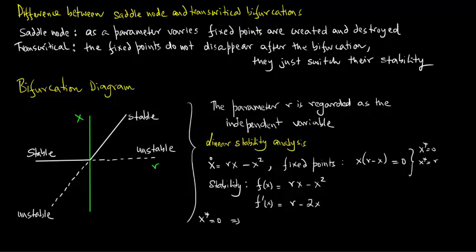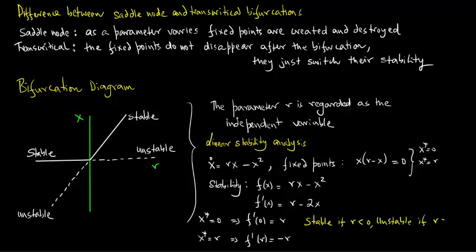At x* = 0, f'(0) = r. At x* = r, f'(r) = -r. So the origin is stable if r < 0 and unstable if r > 0, while x* = r is stable if r > 0 and unstable if r < 0.